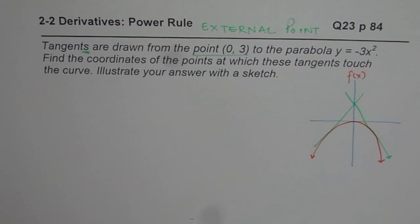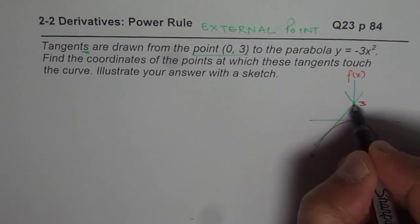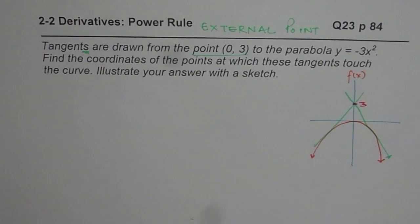So what effectively I've done is I've drawn tangents from external point (0, 3) to the parabola, which is -3x². So that is the situation.